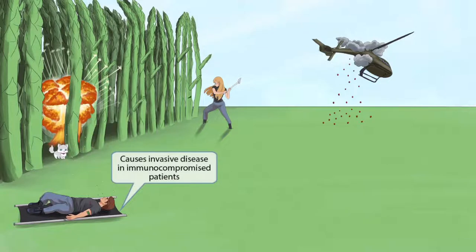We've shown a helicopter going down — this is a war zone after all. The helicopter was shot and parts fell to the ground, causing an explosion in the asparagus jungle, with debris and asparagus seeds flying everywhere. This explosion represents invasive disease, because invasive disease spreads throughout the body. We've shown a wounded soldier in a stretcher next to this area, with seeds flying around him. The stretcher is our symbol for a compromised immune system, so this helps you remember that Aspergillus causes invasive disease in immunocompromised patients.